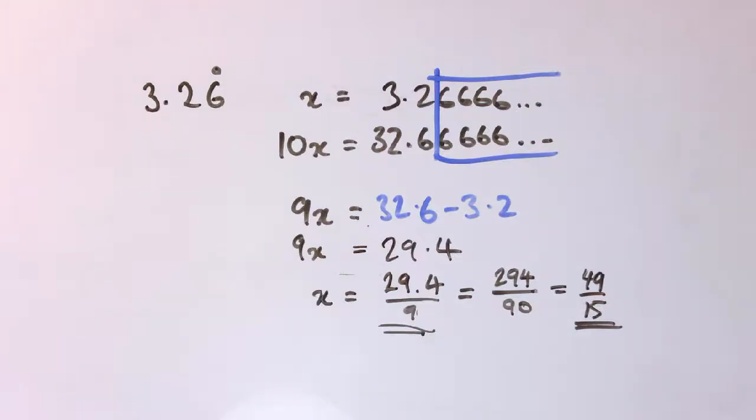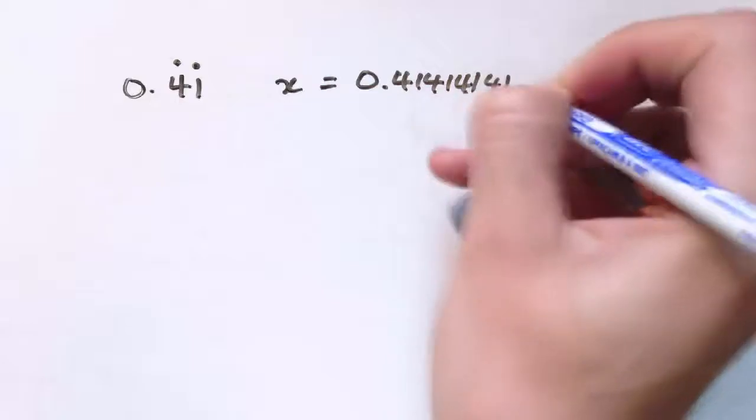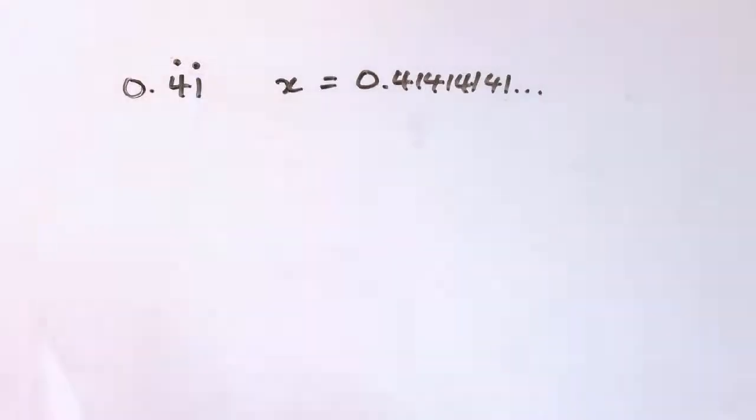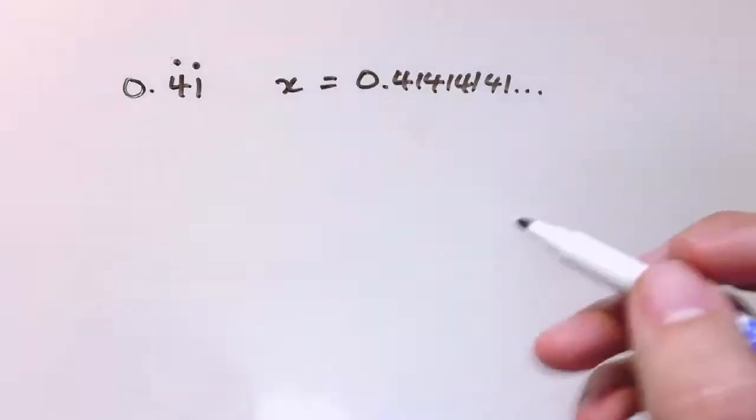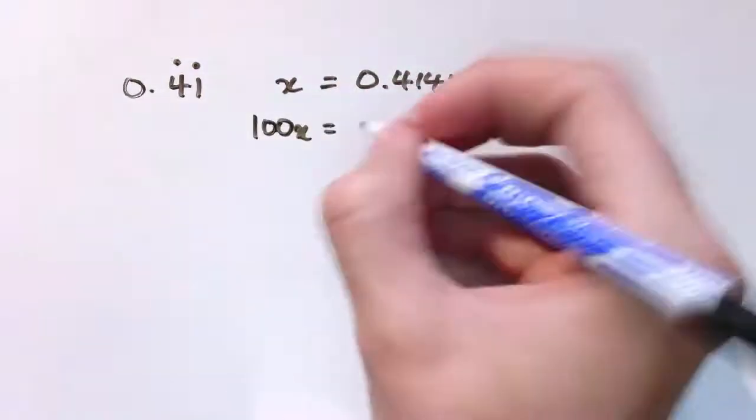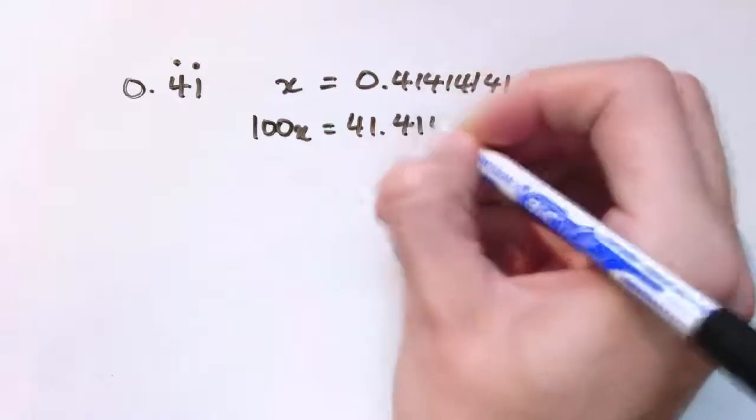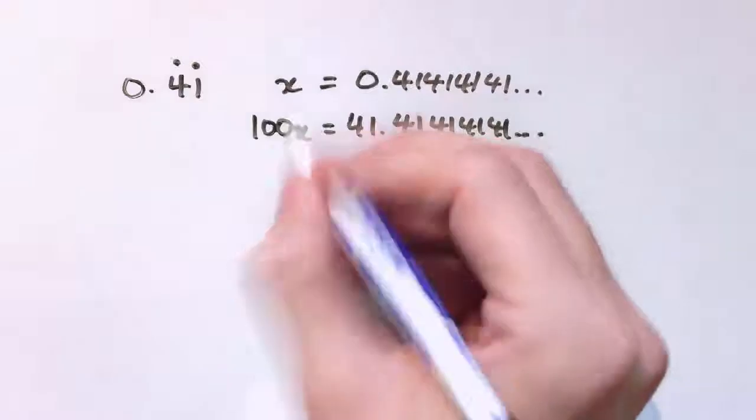Here's another one. This time we've got a recurring pattern that's two digits long, so x here would be 0.41414141... etc. When there's two dots like this, rather than timesing by 10, we're going to have to times by 100. So we'll have 100x.